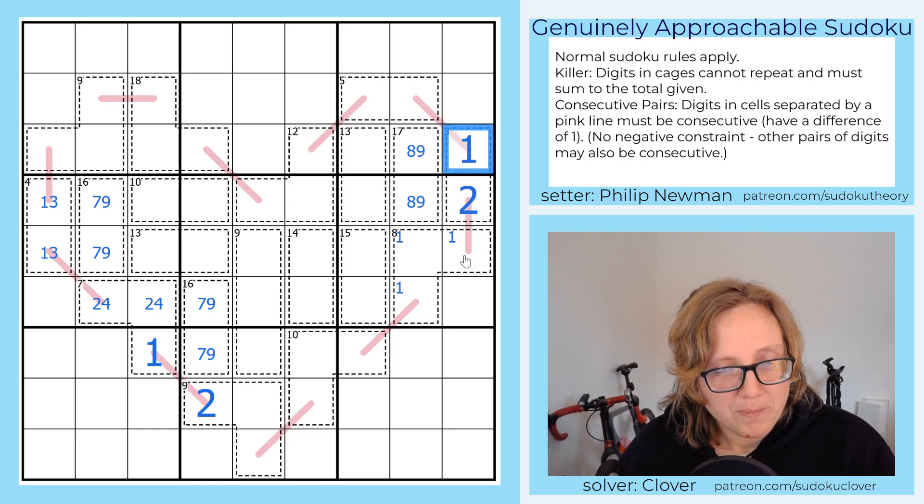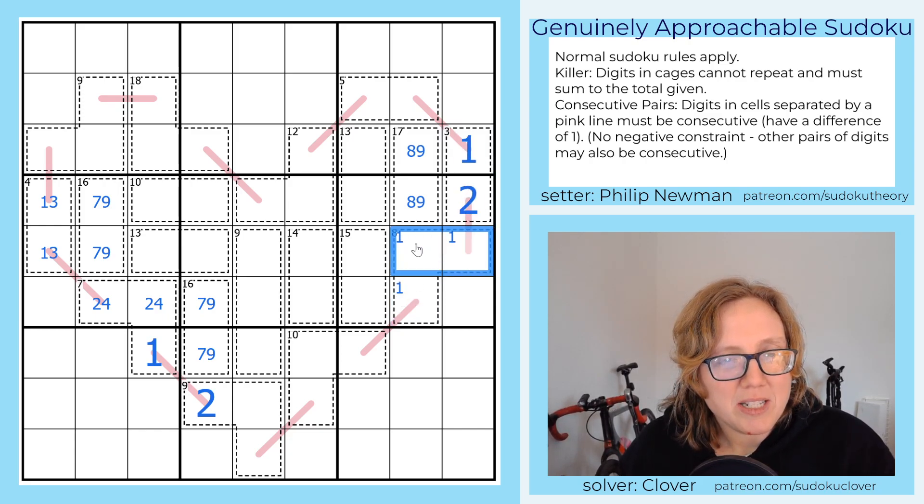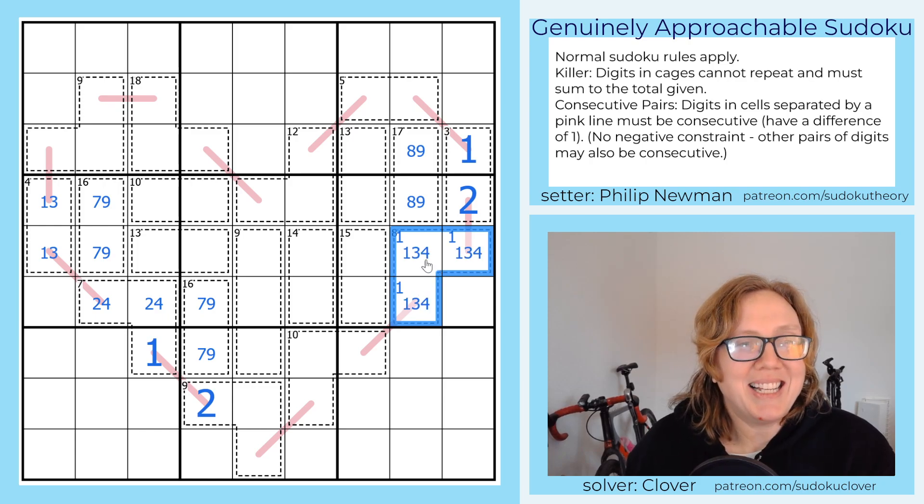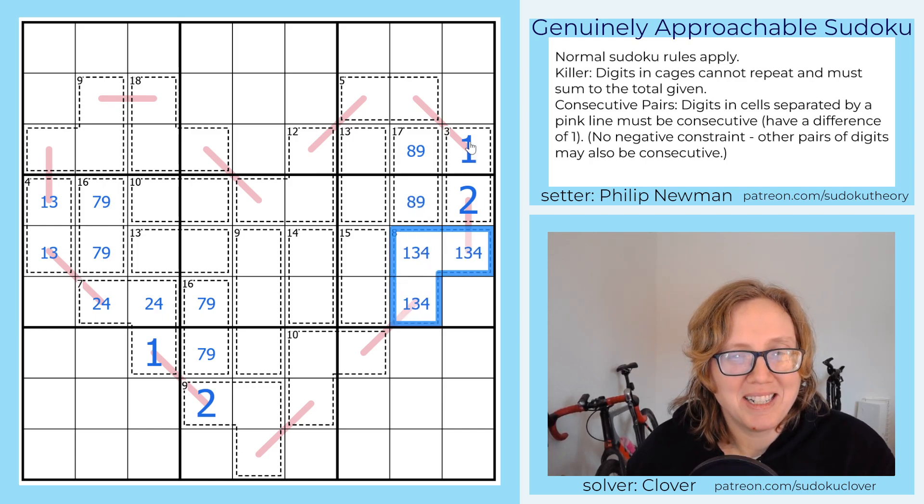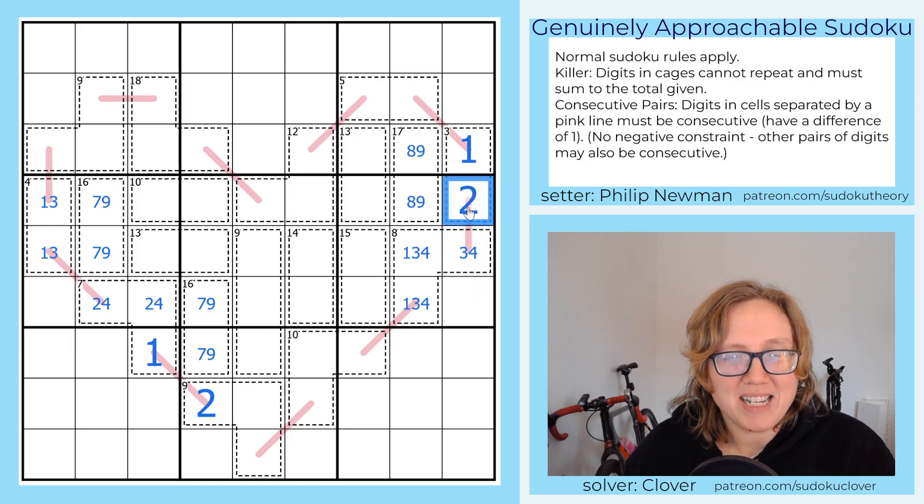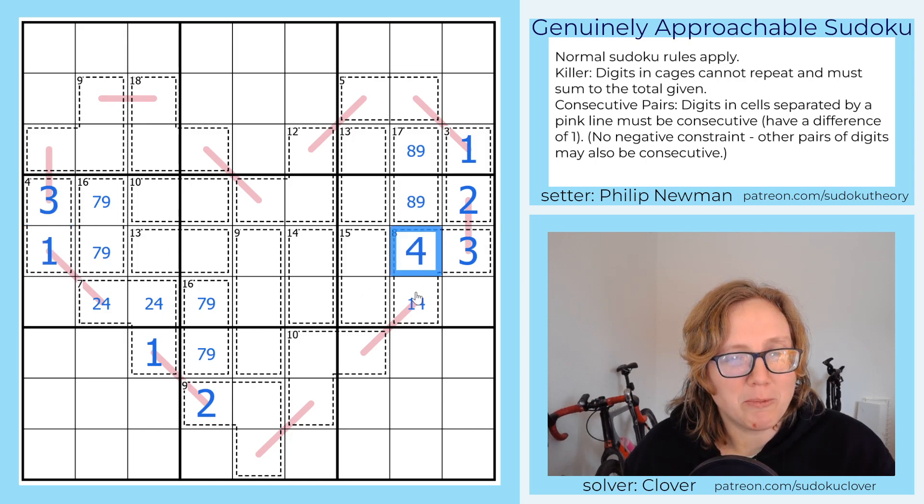So there's a one in here. That makes this a two. So that means we don't get to use a two in our eight cage. That has to be one, three, and four. We can eliminate the one there. And because we know it has to be consecutive with two, we now know it's a three. That three makes this a one. And the one makes this a four.